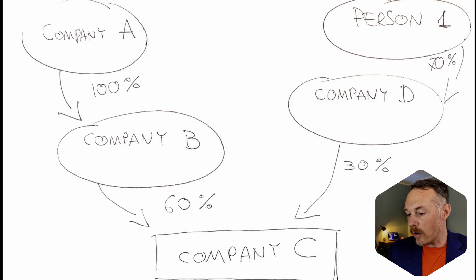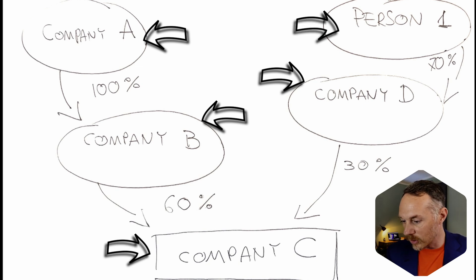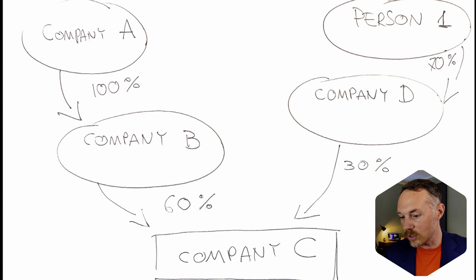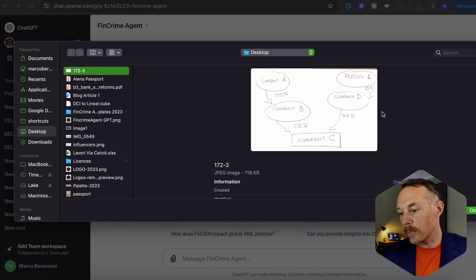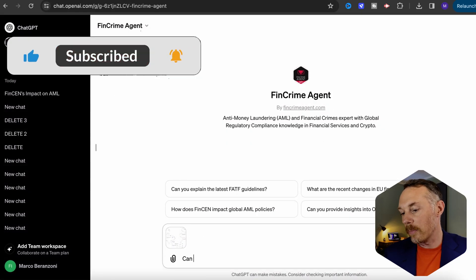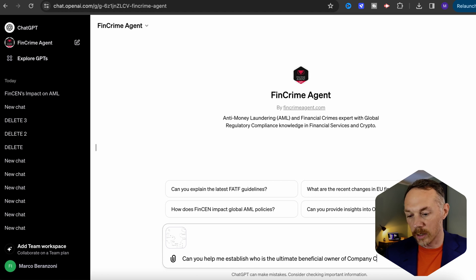I uploaded a sketchy company structure where we have a number of parent and child companies each owning different stakes. There is also a private individual as part of this complex company structure, and my aim is to get some help from FinCrime Agent GPT in establishing who is the actual ultimate beneficial owner of company C. I took a picture with my phone of this scribble and uploaded the image file in JPEG format, asking: can you please help me establish the ultimate beneficial owner of company C?